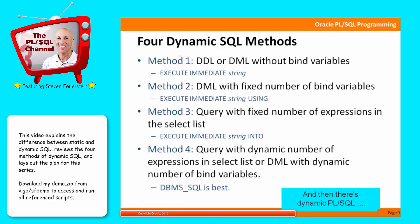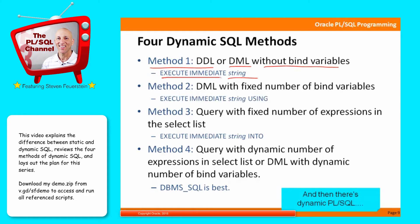The four methods of dynamic SQL, from simplest to most complex: Method one is a DDL statement — create table, drop table, etc. — or a DML statement such as insert, update, or delete, that does not contain bind variables. It's just a string. In that case, you simply use execute immediate, specify the string, and you're done. It's the simplest form. Method two is DML — insert, update, delete — with a fixed number of bind variables.